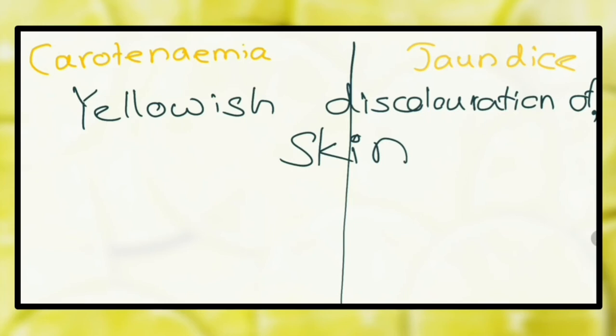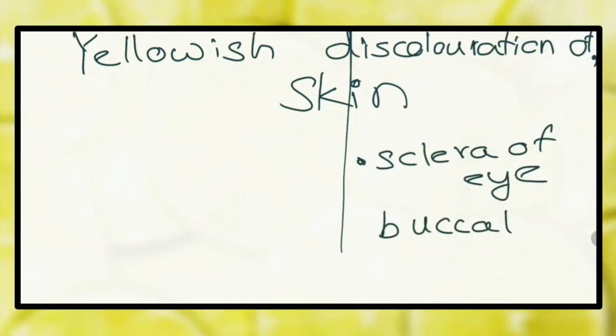How are you going to differentiate this condition from biliary jaundice? In carotenemia, there's a yellowish discoloration of skin, but there's no yellowish discoloration in sclera of eyes and buccal mucous membranes as in jaundice.